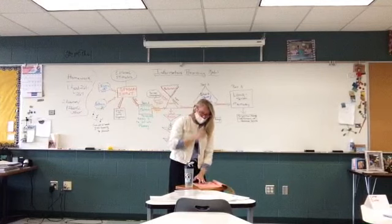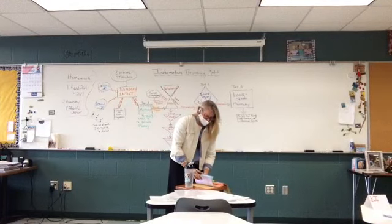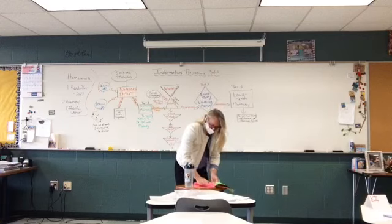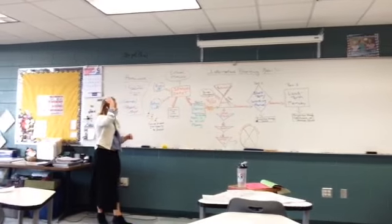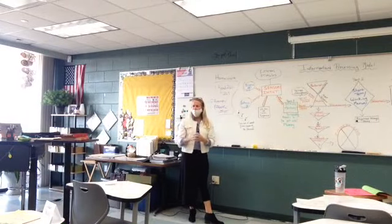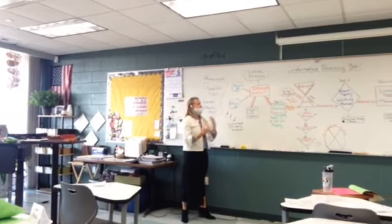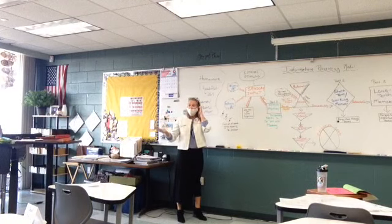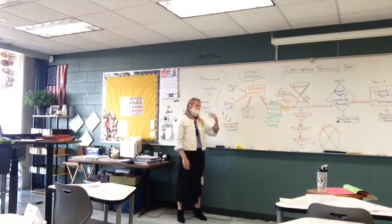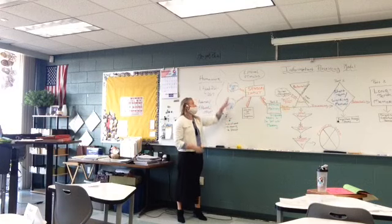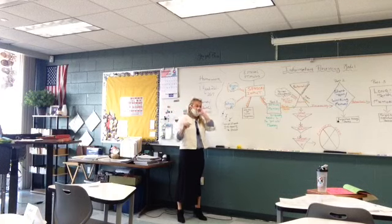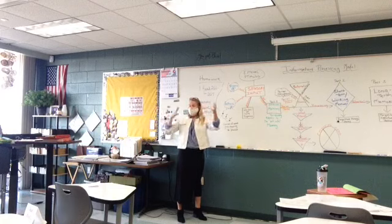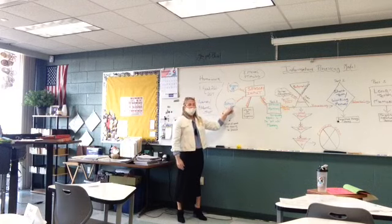I would encourage you not only to write down what I have on the board, but any side notes that make it make more sense — highlight things or circle things that are really important. The first thing that comes into our brain is an external stimulus — you're either hearing something or you're seeing something. These two are not hard to remember: 'iconic' has the word 'eye' in it, and 'echoic' — if you think about like an animal hearing — that's how I always remember that. This is my really bad drawing of an ear, and this is my better drawing of an eye.